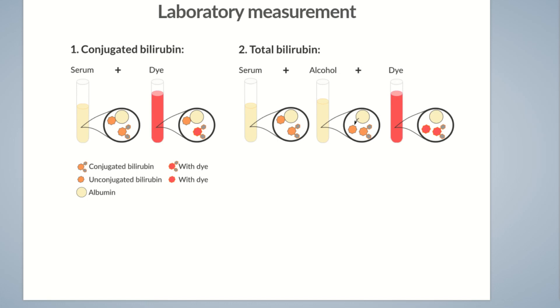Subsequently, the concentration of unconjugated bilirubin is calculated. Conjugated bilirubin is subtracted from total bilirubin, which gives unconjugated bilirubin. Because of this indirect measurement, unconjugated bilirubin is also termed indirect bilirubin.